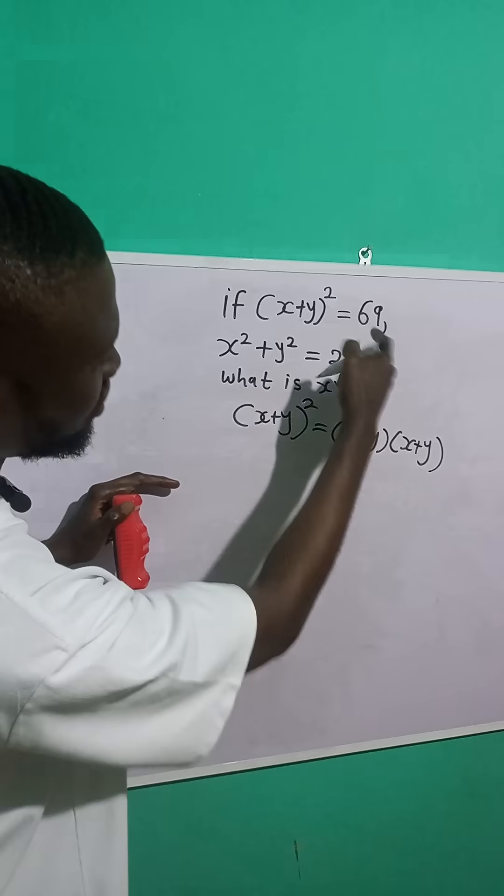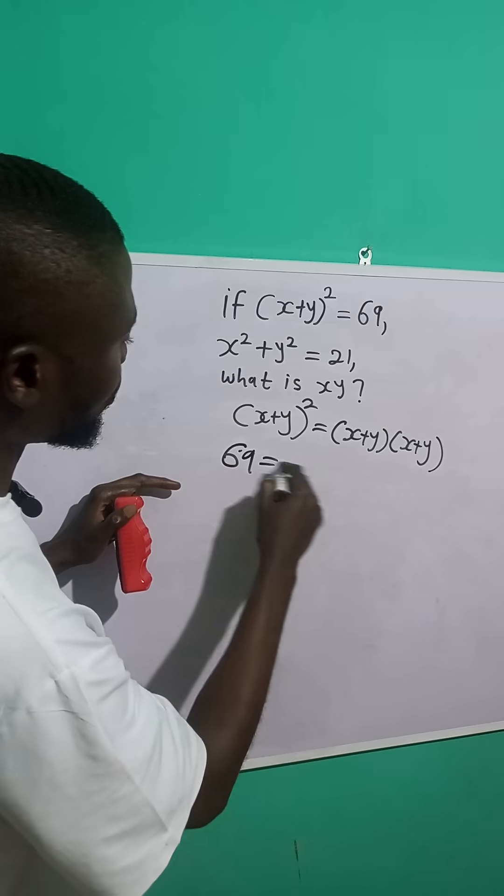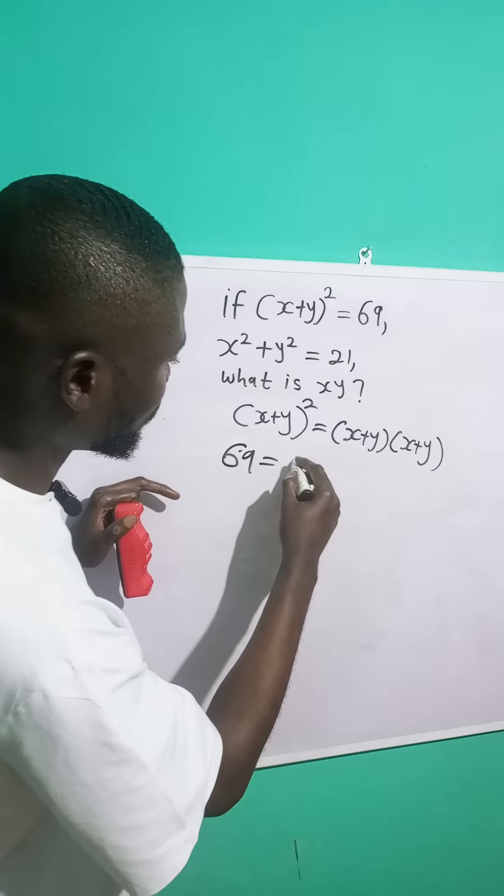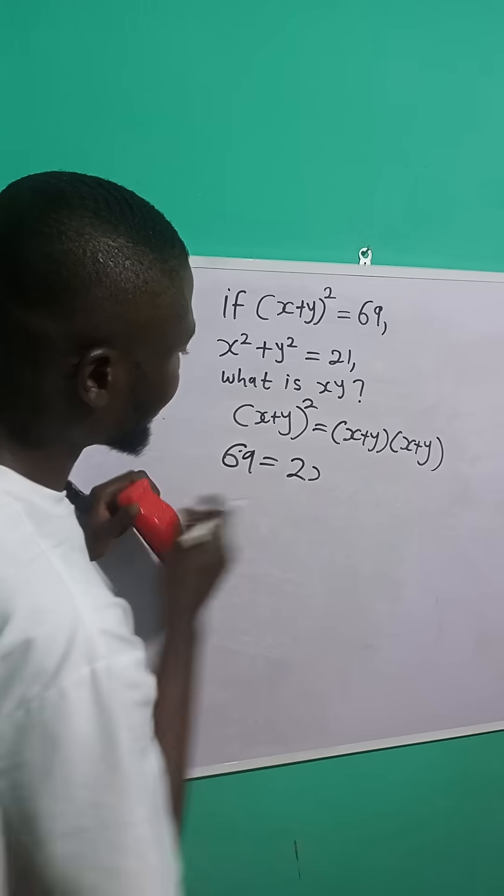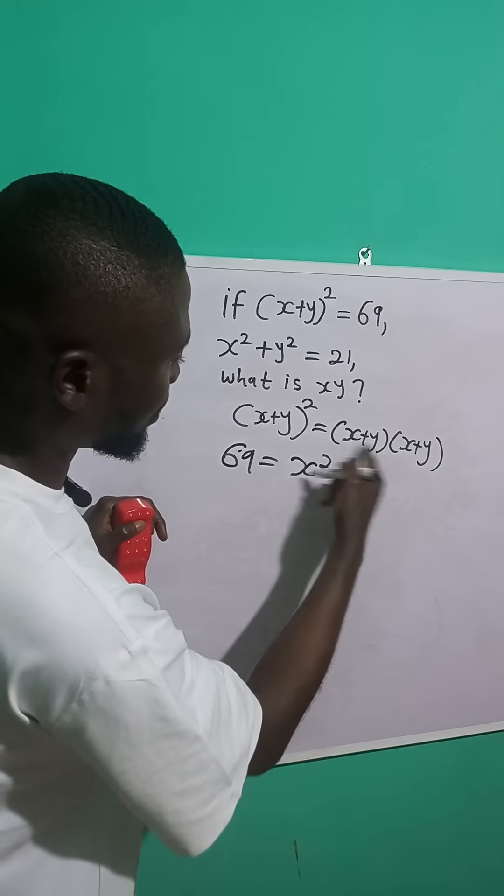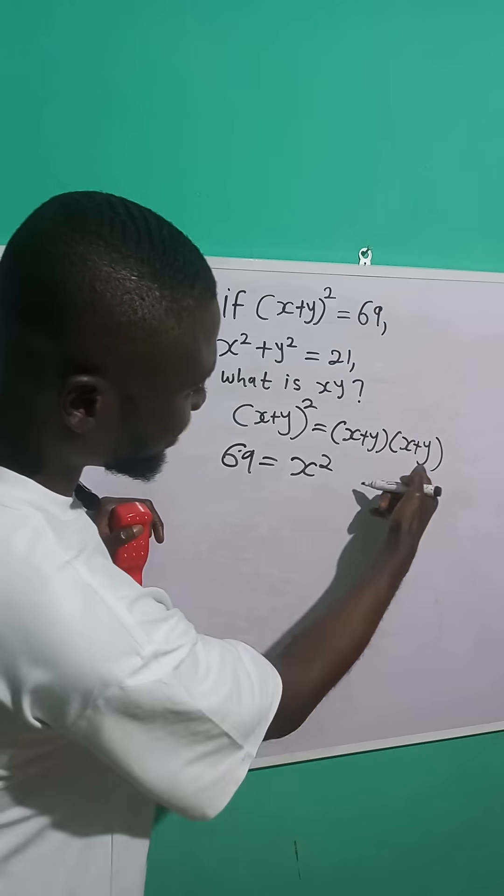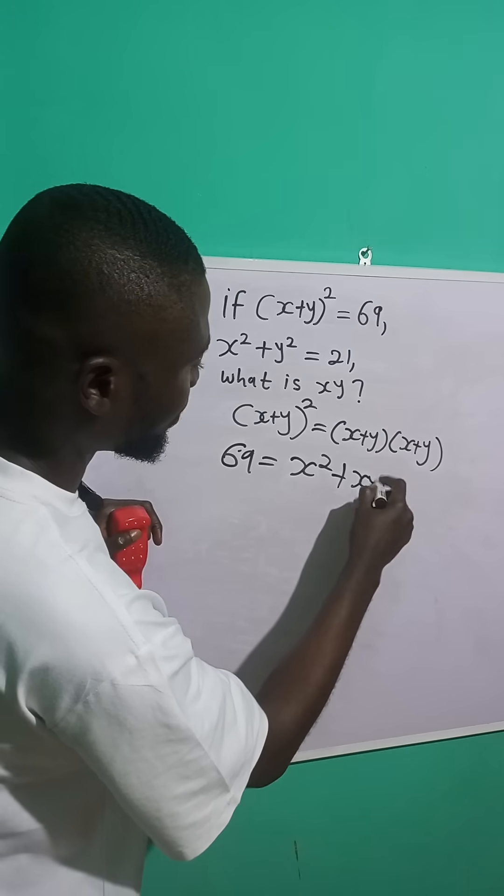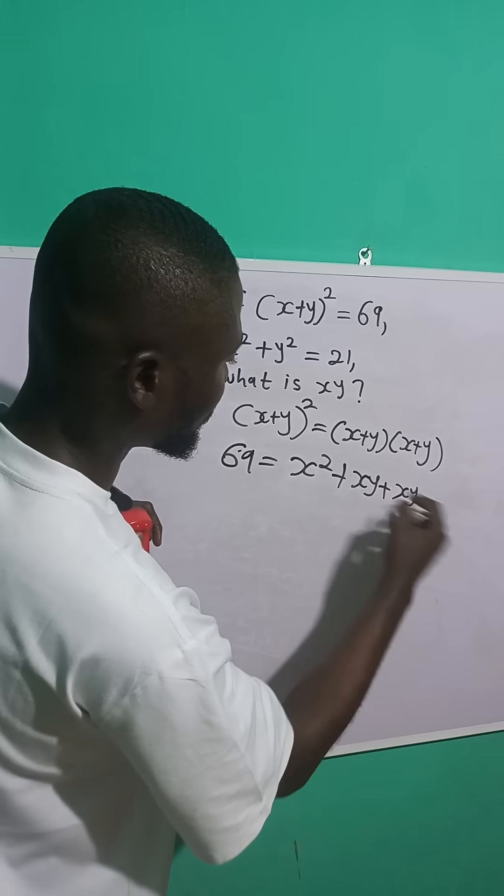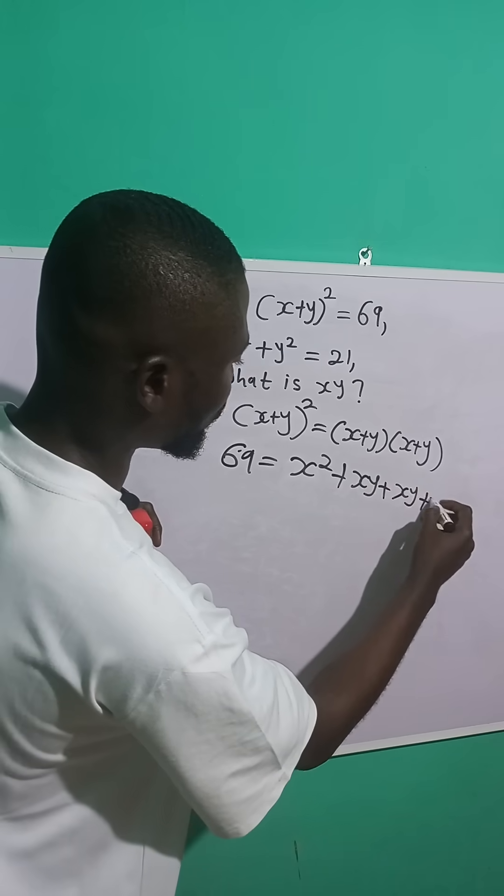But they say that it is equal to 69. So 69 is equal to, let us expand further. x times x is x squared. Then x times y is xy, right? Plus y times x is xy. y times y is y squared.